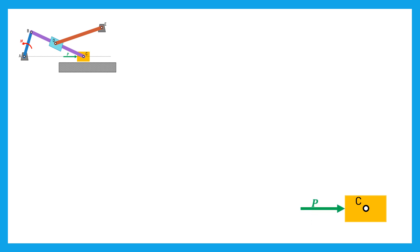Let's start with the slider C. The slider is first subjected to the external force P. The slider is connected to the ground using a translating kinematic pair; thus there is a normal force applied by the ground. The slider is also connected to the bar BC using a rotating kinematic pair. Hence, there are two reactions CX and CY acting on the slider, applied by the bar BC.